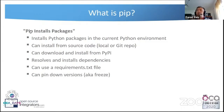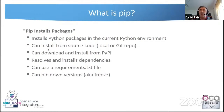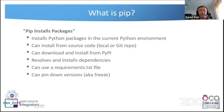Pip is very flexible — it can install from locally available packages, download them from PyPI, or even install directly from source code. You can provide a git URL to pip and it will install packages from there, as long as the source code includes the proper setup information.